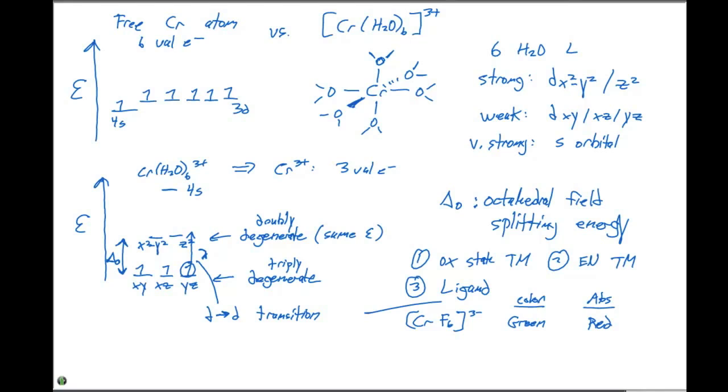If we have Cr(H₂O)₆ 3 plus, the color we see with our eyes is violet. That means the absorption is in the yellow region of the spectrum. That means the absorption has to be in the violet region of the spectrum. The absorption energy is directly related to the delta O.